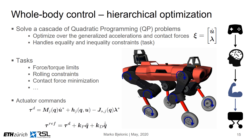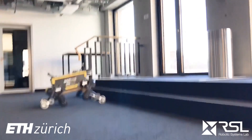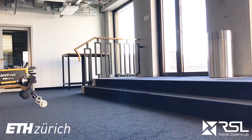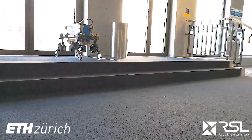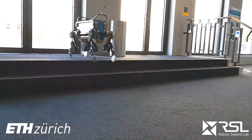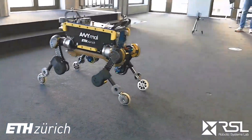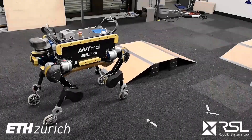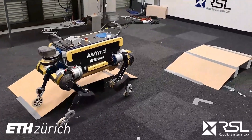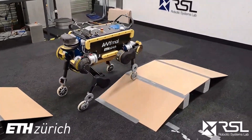This video shows the benefits of our force control approach. We are able to create smooth motions. The robot has no idea about this set of stairs, but because we are using a torque control approach, the robot is able to adapt to this unseen terrain. Again, the robot is locomoting blindly over these inclines.